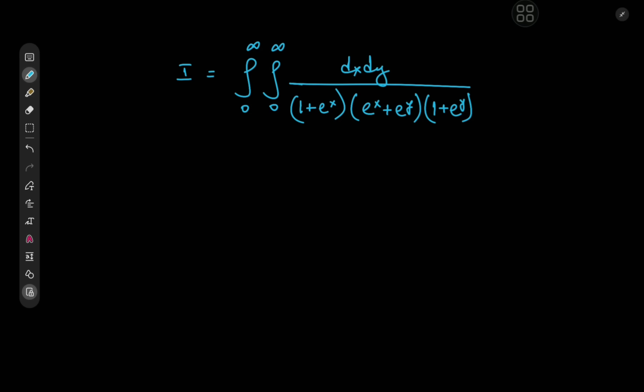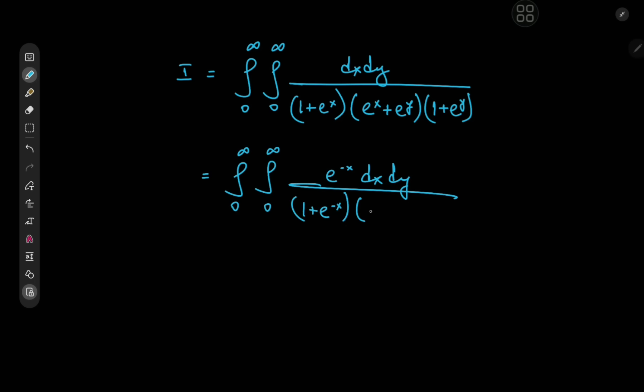Solving double integrals using symmetry is something I quite enjoy as well. The solution development, for me, would start with an expansion using e^(−x). That would be quite useful for the substitutions I'm going to invoke later. So we're going to start by writing this as the double integral from 0 to infinity of e^(−x) dxdy divided by (1 + e^(−x))(eˣ + eʸ)(1 + eʸ).